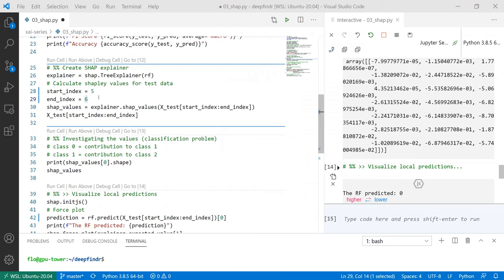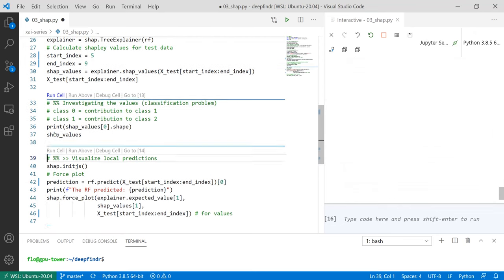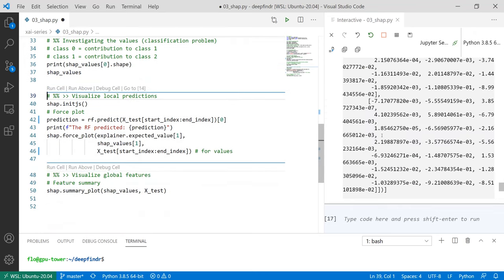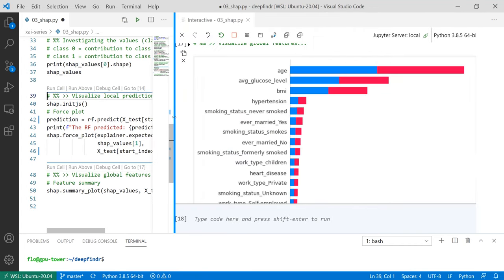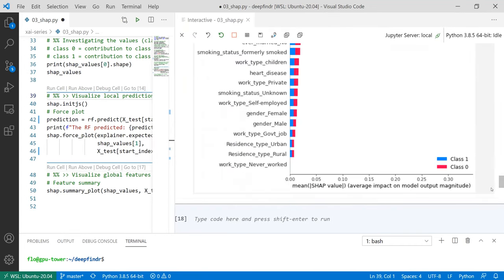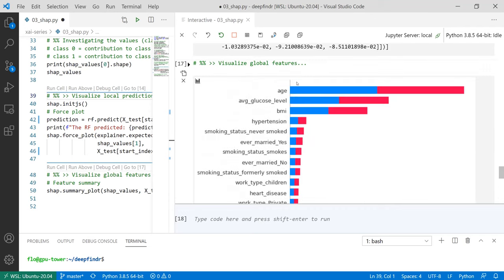But what we can also do is calculate the Shapley values for several instances and then use that knowledge to get an overall plot so importance for each of our features and that looks like this. So we see we have two classes zero and one and the contributions are the highest for age, the glucose level and body mass index.